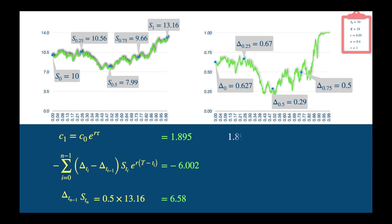If we add these cash flows, we get 2.47. But remember, we sold the call option with a strike price of 10. So under this scenario we will have to pay 3.16 to the option buyer. The delta hedging has helped but it hasn't fully replicated the option payoff.